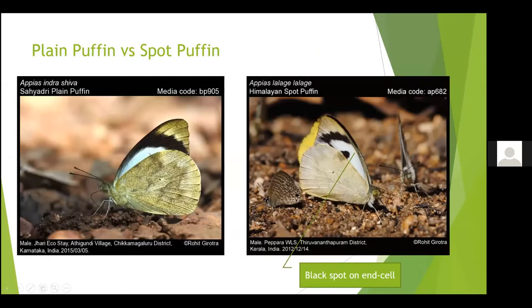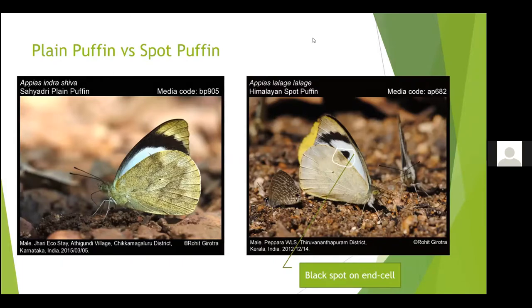There are two puffins here — a Plain Puffin and a Spot Puffin. Plain Puffins are at middle elevations and Spot Puffins are at high elevations, maybe above 500 meters. The difference between them is the presence of a spot at the end cell of the forewing underside — there is a spot in the Spot Puffin and no spot in the Plain Puffin. That's how these two are different; otherwise they look the same.